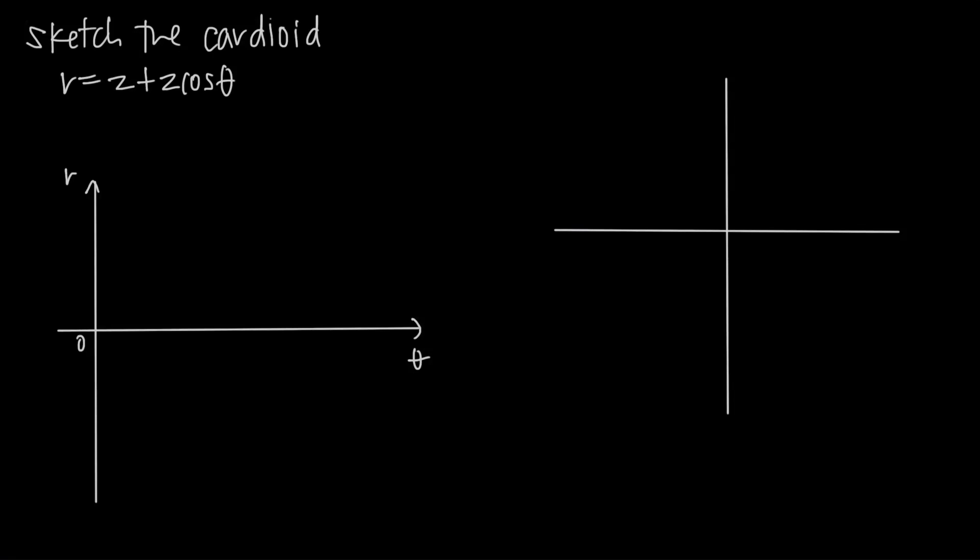In this video we're talking about how to sketch polar curves, and in this particular example we're going to be sketching a cardioid, and the equation we've been given is r equals 2 plus 2 cosine of theta.